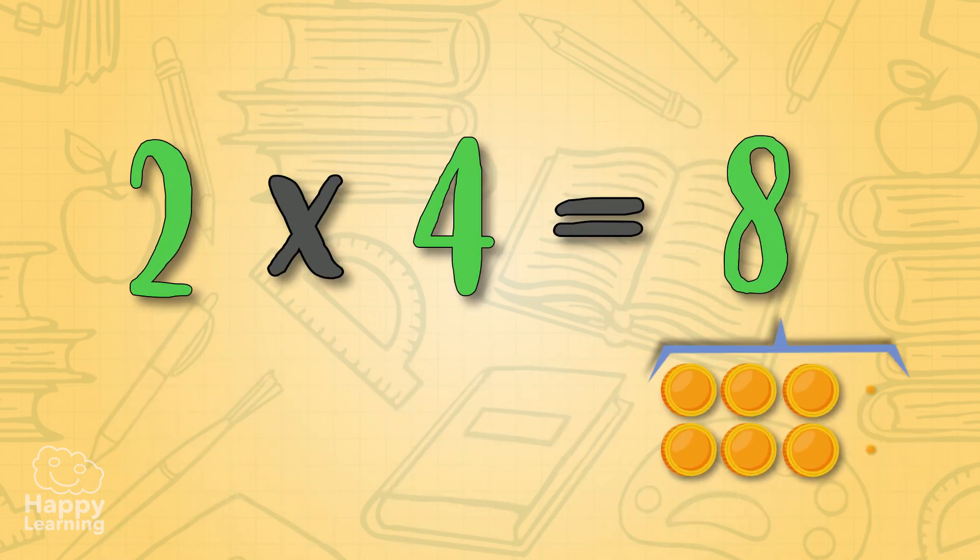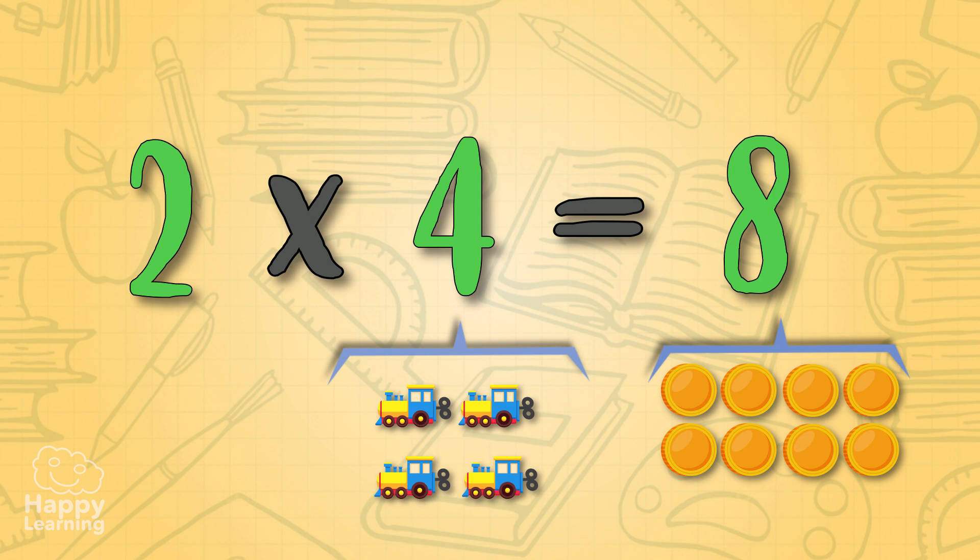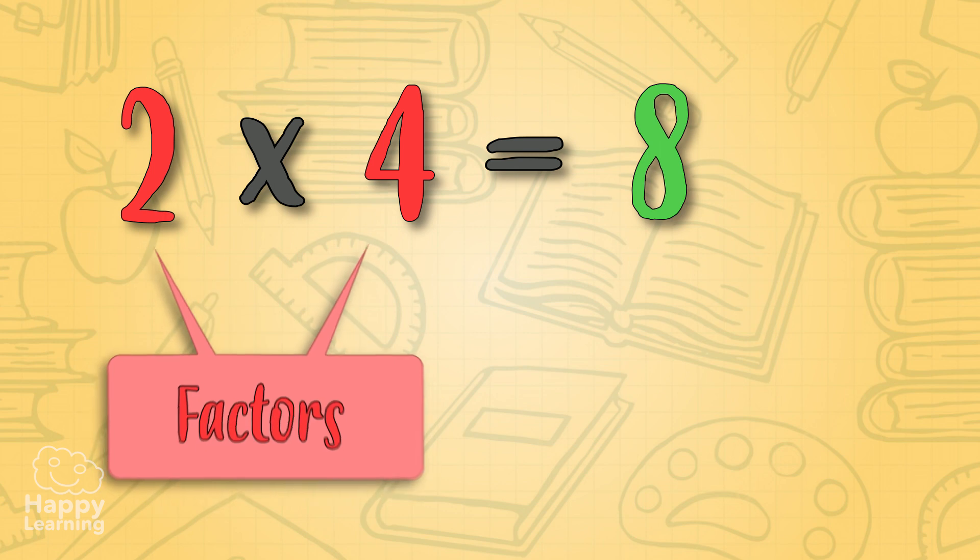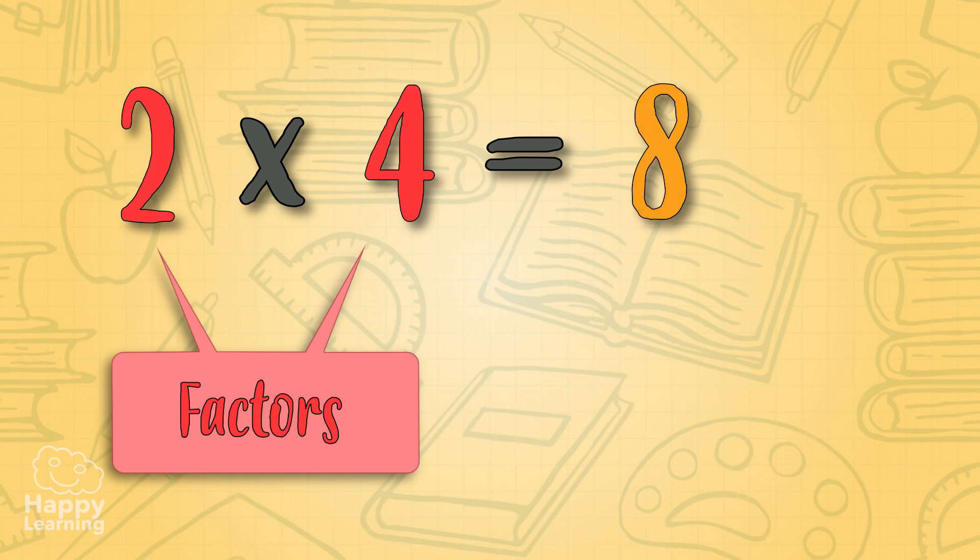We would need eight coins to buy the four toys. The numbers that appear in the multiplication are called factors. Number two and four are the factors, and the answer of the operation is called the product, so number eight is the product.